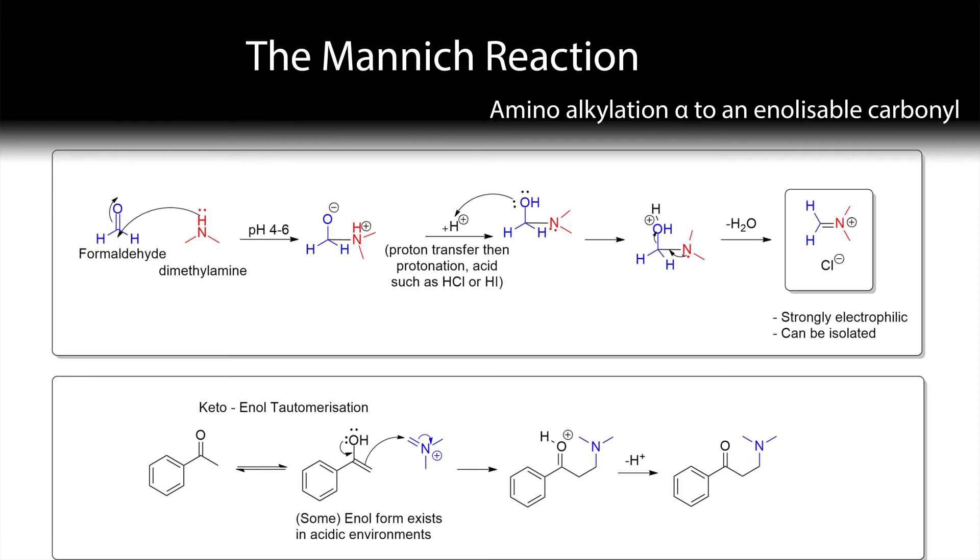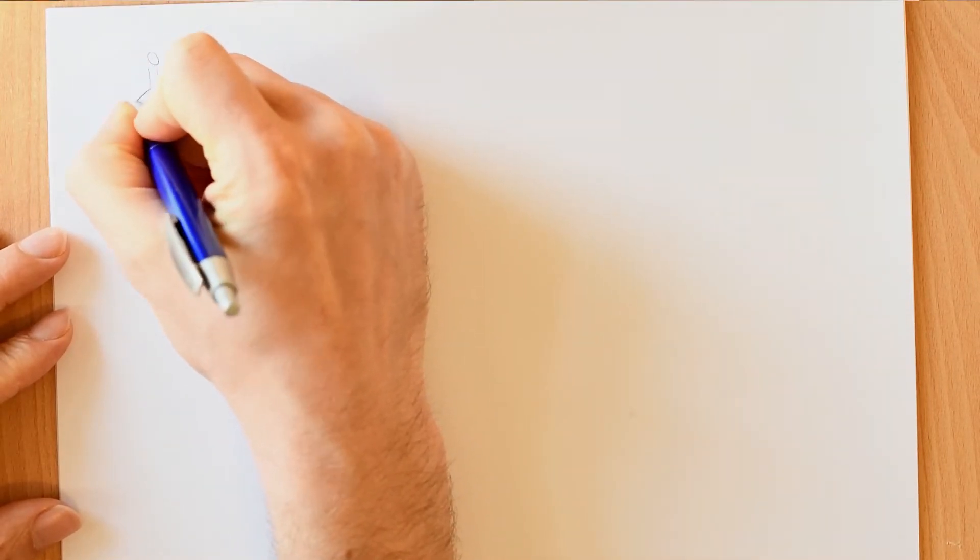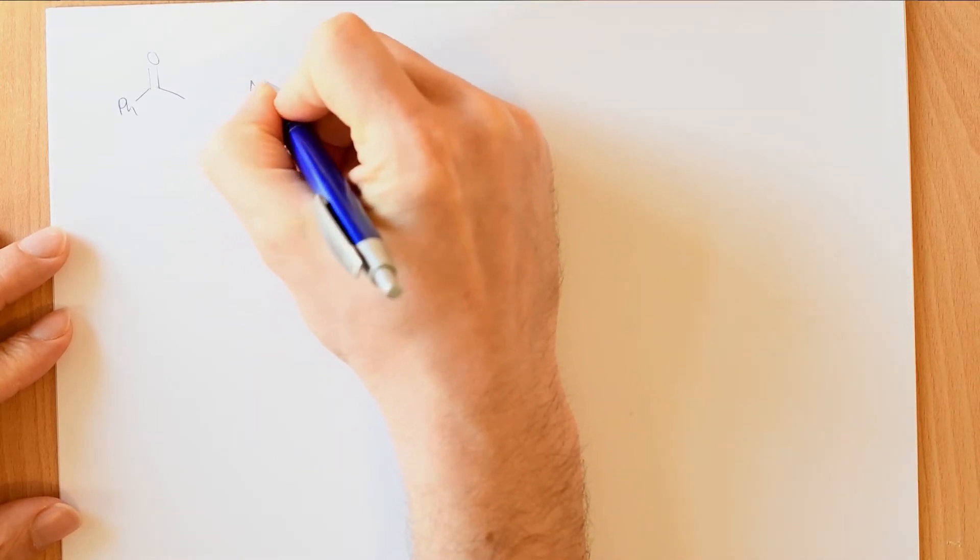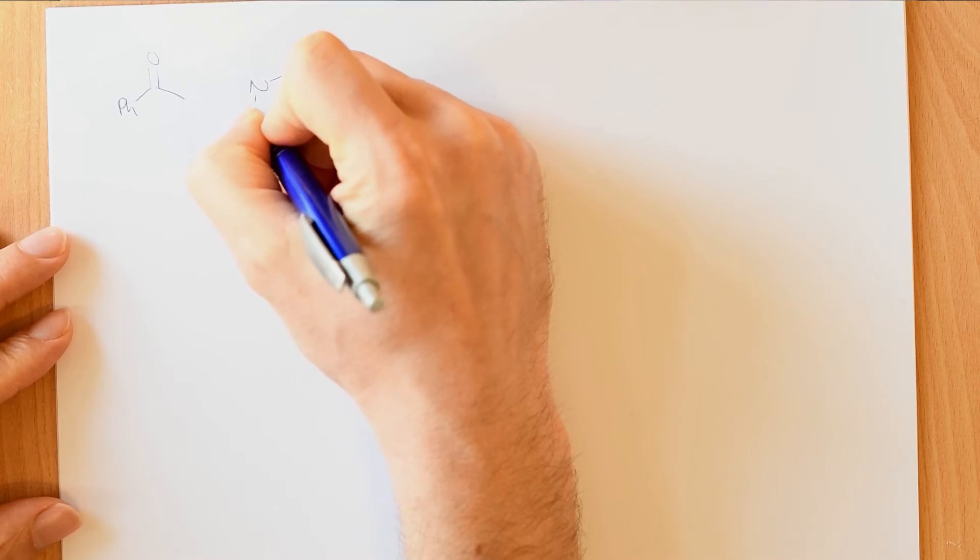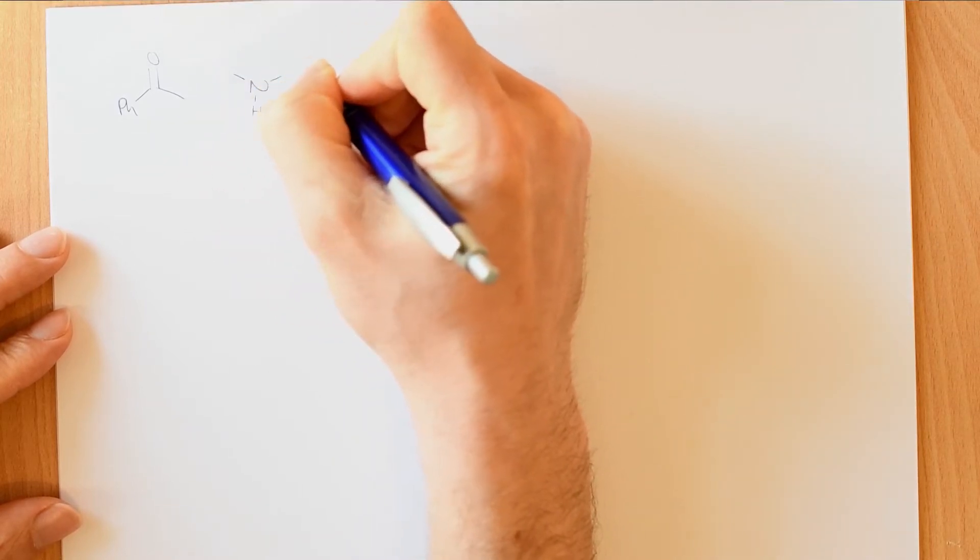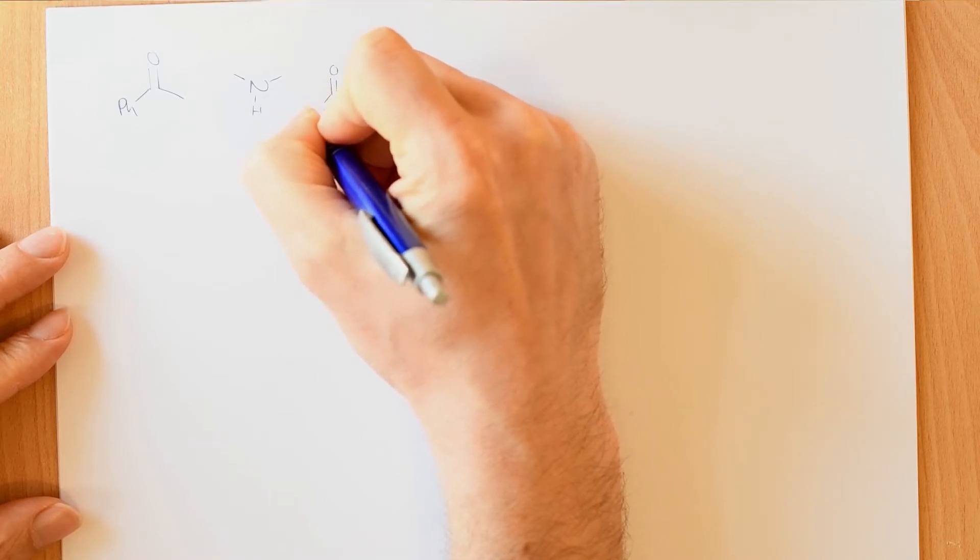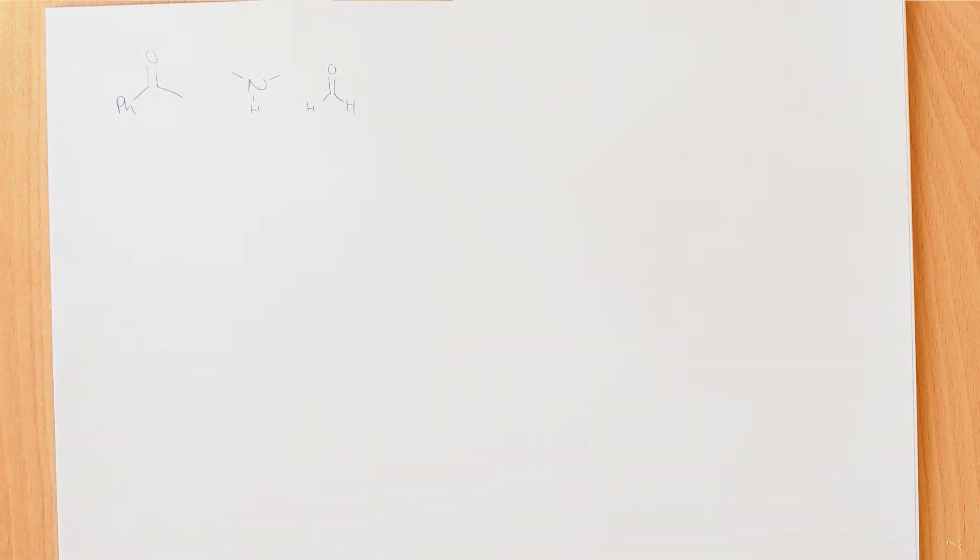So it's a reaction that takes place between an enolizable ketone, in this case we use acetophenone, primary or secondary amine, although you can do it with ammonia as well. In this case we're going to do it with dimethylamine and an aldehyde. The original example was formaldehyde. You can do it with other aldehydes, but formaldehyde works quite well.